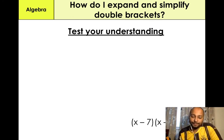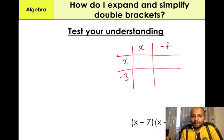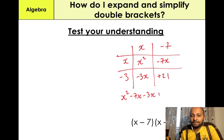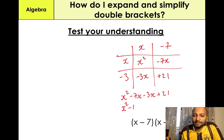(x − 7)(x − 3) — this time let's use the grid method. First bracket goes on the row: X minus 7. Second bracket goes in the column: X minus 3. X times X — X squared. X times minus 7 — minus 7X. X times minus 3 — minus 3X. Minus 3 times minus 7 is positive 21. So: X squared minus 7X minus 3X plus 21. Simplifying: minus 7X minus 3X gives us minus 10X plus 21. That's our final answer.